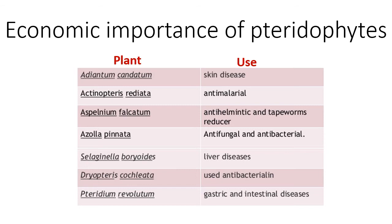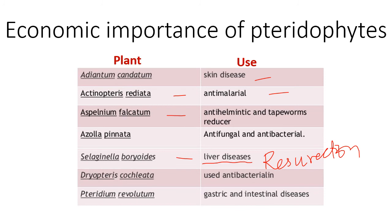Further medicinal uses: Adiantum caudatum is used in skin diseases — its leaf paste is applied. Actinopteris radiata has anti-malarial properties. Asplenium falcatum has anti-helmintic and tapeworm-reducing properties. Azolla pinnata is anti-fungal and anti-bacterial. Selaginella bryopteris is used in liver diseases and is also a resurrection plant. Dryopteris is used as anti-bacterial, and Pteridium revolutum is used in gastric and intestinal diseases. This concludes the chapter. Thank you.